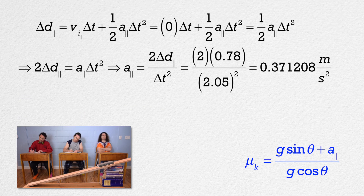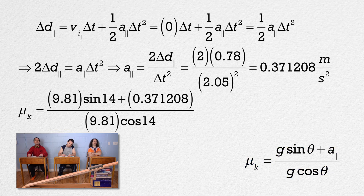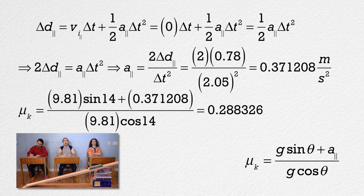The coefficient of kinetic friction equals 9.81 times sine of 14 plus 0.371208, divided by 9.81 times cosine of 14, which gives 0.288326, or 0.29 with two significant digits.